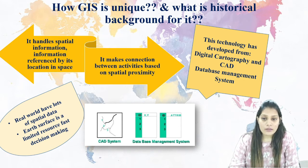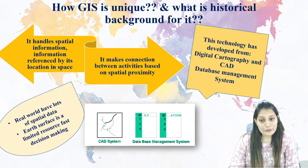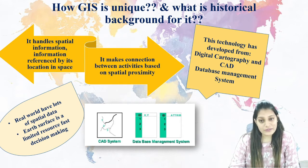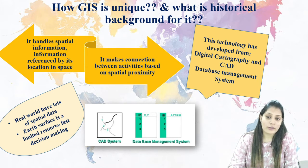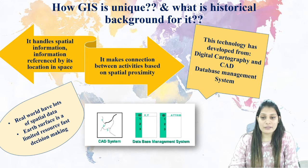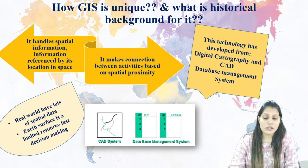Previously, many years ago, we were making the plans and detailing of any scheme or anything related to the civil engineering field — that is water supply networks, drainage networks, planning, or pipeline supply systems. Everything was made in AutoCAD. But now this new technology has evolved in such a way that we can convert AutoCAD data into GIS data.